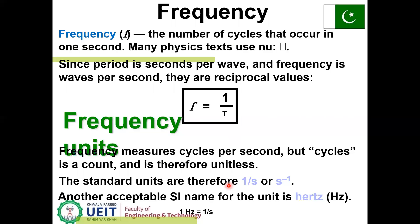Frequency is the number of cycles that occur in one second. Period is in seconds per wave and frequency is waves per second, so they are reciprocal to each other: frequency equals one over T. Frequency units are cycles per second; since a cycle is dimensionless, the standard unit is per second (s⁻¹), also known as Hertz (Hz).